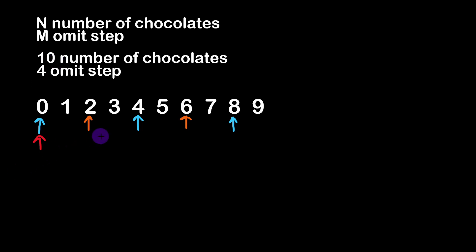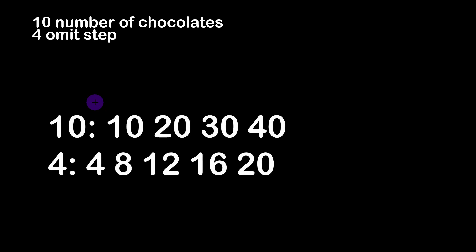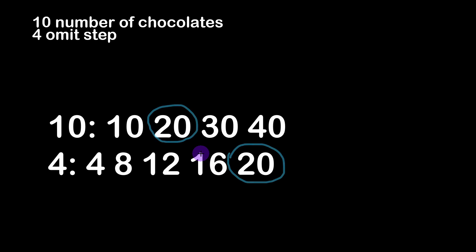Let's take the example provided by the problem: we have a box of 10 chocolates and we are omitting 4 chocolates every time. The multiples of 10 are 10, 20, 30, 40, and so on. The multiples of 4 are 4, 8, 12, 16, 20, and so on. The least common multiple between these two numbers is 20.